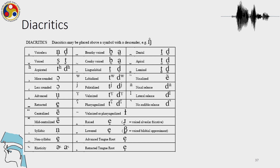For consonants, we have breathy voice, creaky voice, and lingolabials which we just showed, and then labialized, palatalized, velarized, pharyngealized — these are the secondary articulations which we will see shortly. And also these are the symbols for dental, apical, laminal, nasalized and nasal release, lateral release, and no audible release.